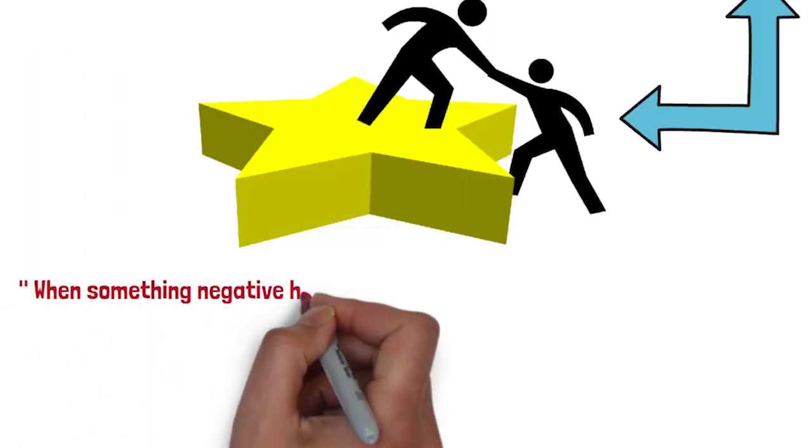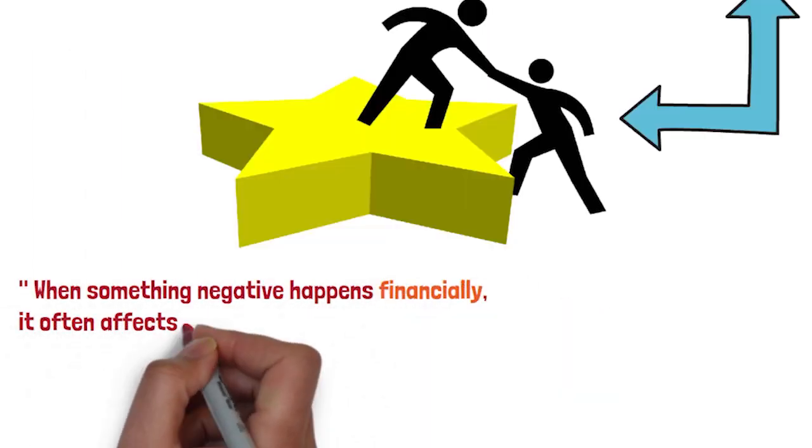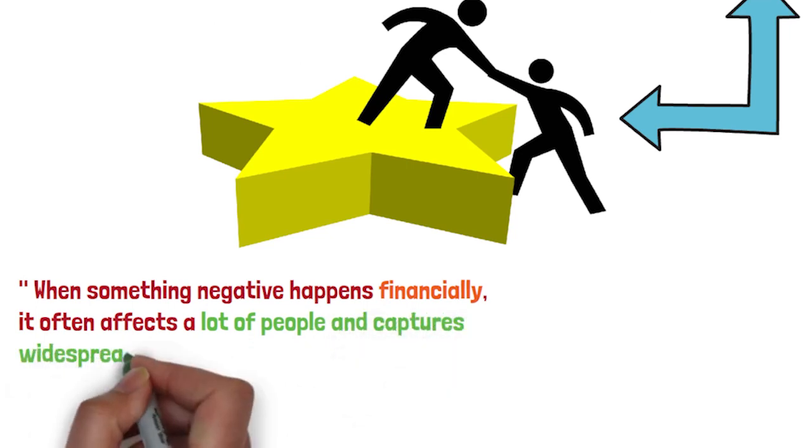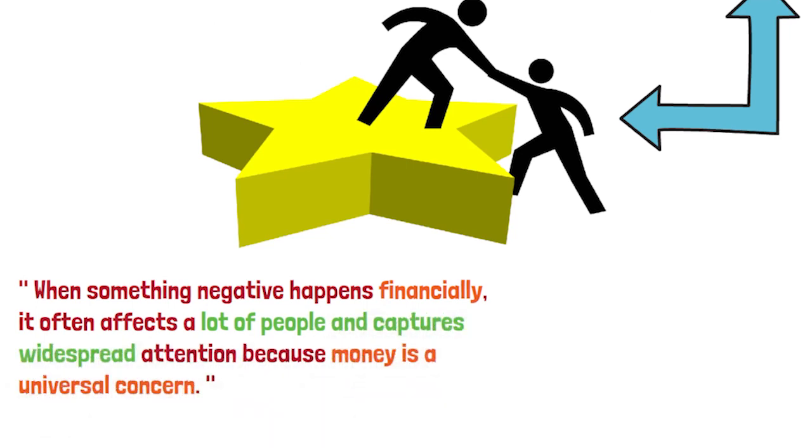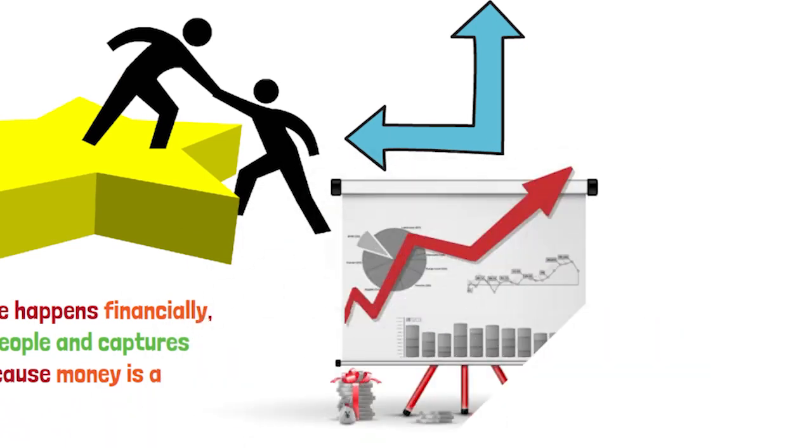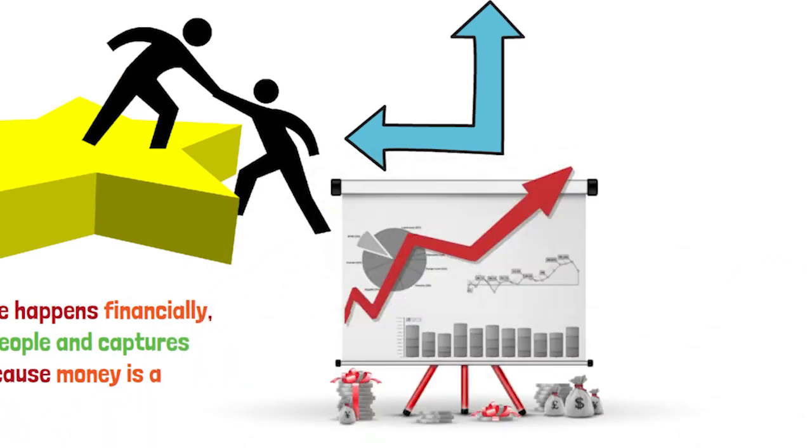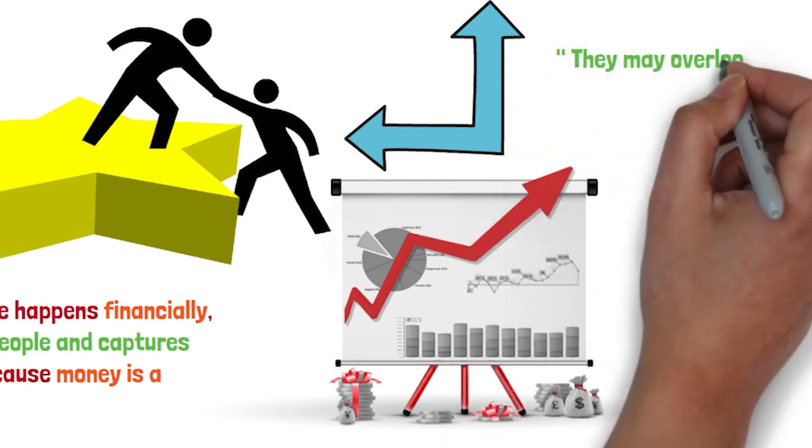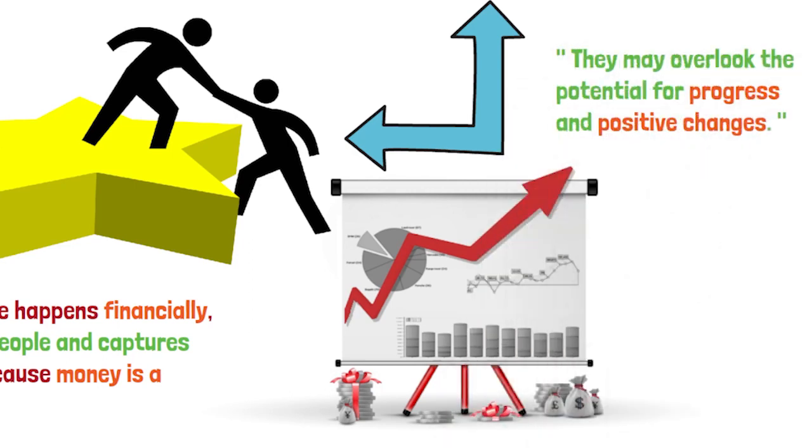When something negative happens financially, it often affects a lot of people and captures widespread attention, because money is a universal concern. Pessimists tend to predict future outcomes solely based on present trends, without considering the adaptability and resilience of markets. They may overlook the potential for progress and positive changes.